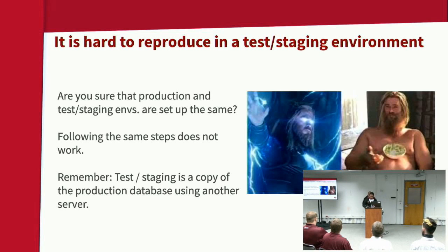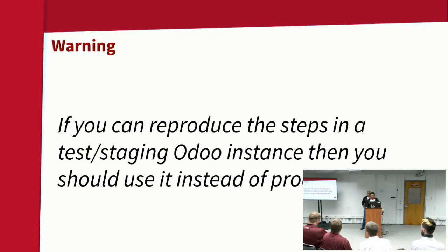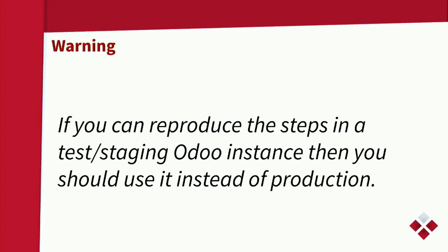The most important difference is that in a test environment you don't have the most important element: the users. In production, you have all the users pressing the button and that can break the instance. But if you can reproduce the step in a staging instance, then you should use it instead of production. But there are a lot of other issues — it's not easy to reproduce.